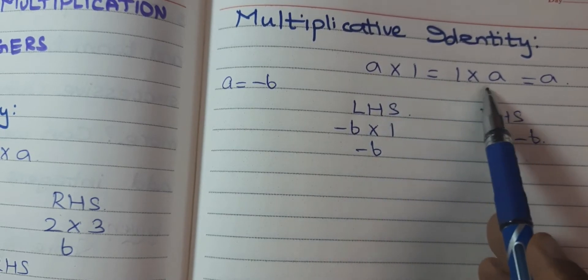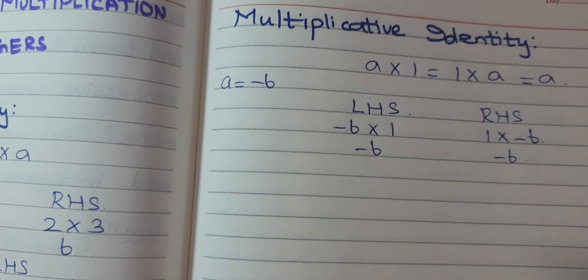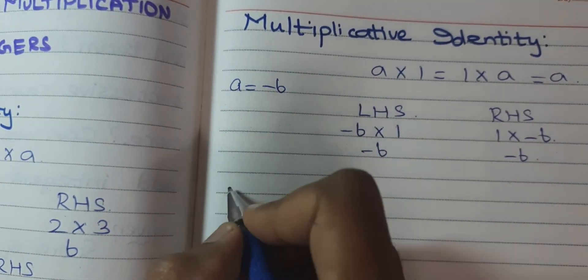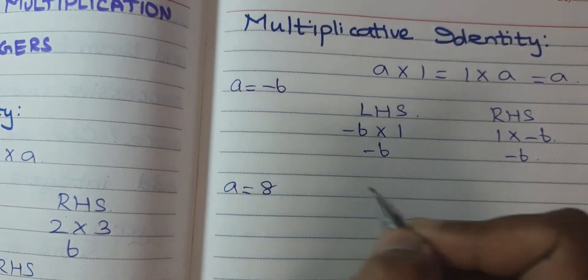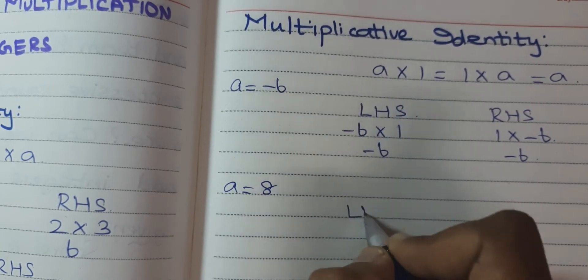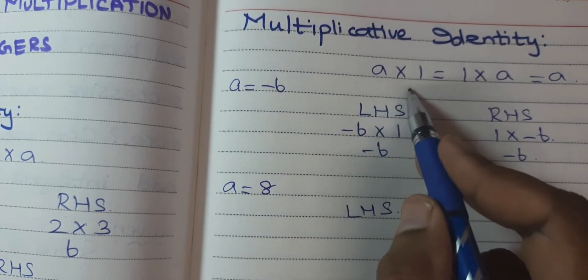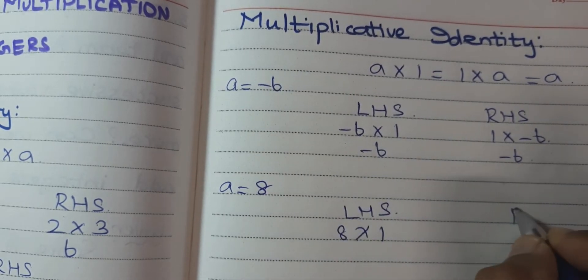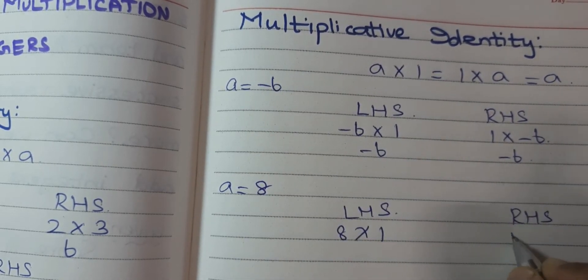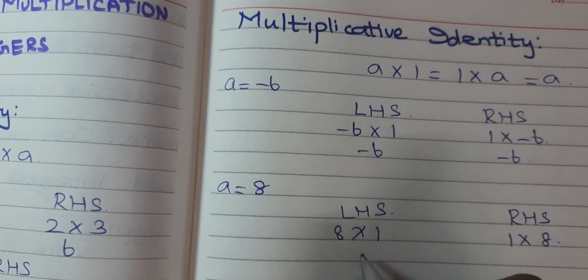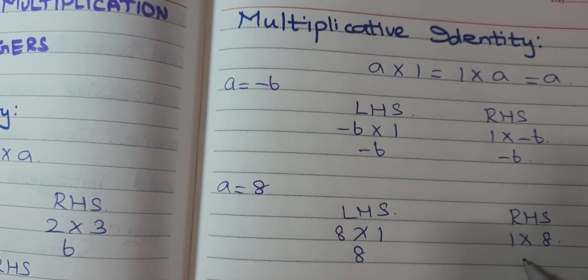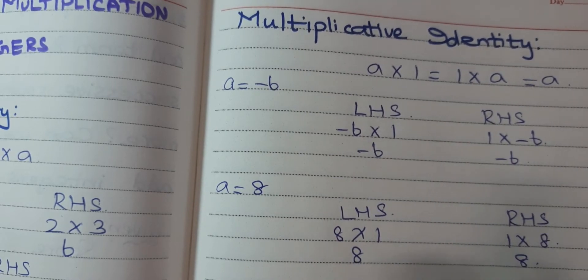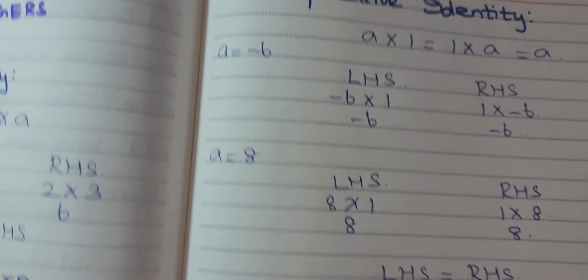Let me also do this with a positive integer: A = 8. LHS = A × 1 = 8 × 1 = 8. RHS = 1 × A = 1 × 8 = 8. Therefore LHS equals RHS, so this condition is satisfied.